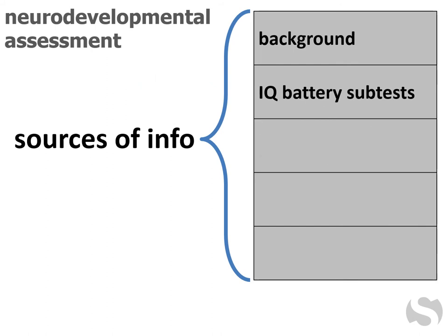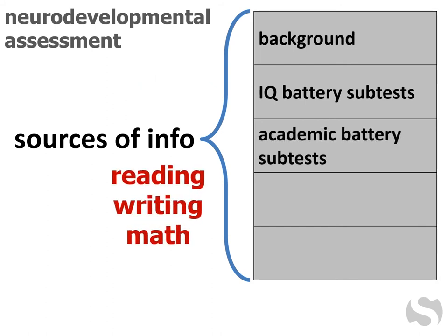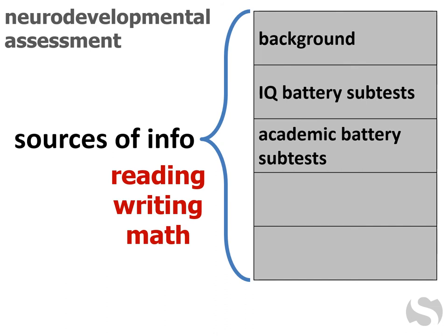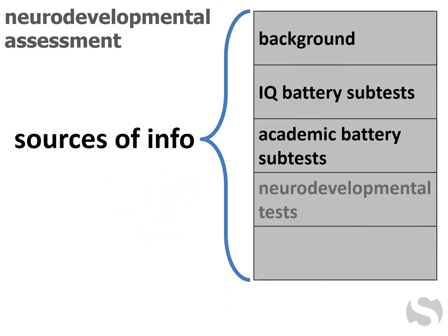An academic battery consists of many subtests to appraise components of reading, writing, and math. Neurodevelopmental tests tend to be more targeted in what abilities they gauge, such as phonology or planning and organization.